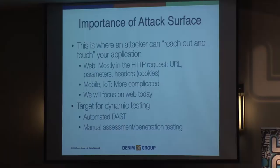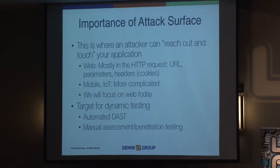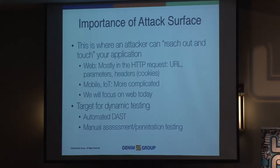When I talk about attack surface in the context of web applications, I'm talking about where an attacker can reach out and touch your application. From a practical standpoint, this means what are the set of HTTP requests that can be made against your application where your application is going to do some processing — what are the URLs folks can access, and for each URL, what parameters can be passed in that will change the behavior of the application, including HTTP headers and cookies.